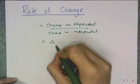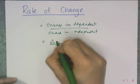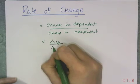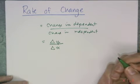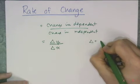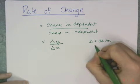And instead of saying dependent, we're going to say change in y over the change in x. So this is the Greek letter delta, and it's used for change.